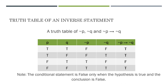For the inverse, you have to construct the column for the negation of P, negation of Q, and then if negation of P then negation of Q. I have already listed out the negation of P as false, false, true, true, and then the negation of Q as false, true, false, true.